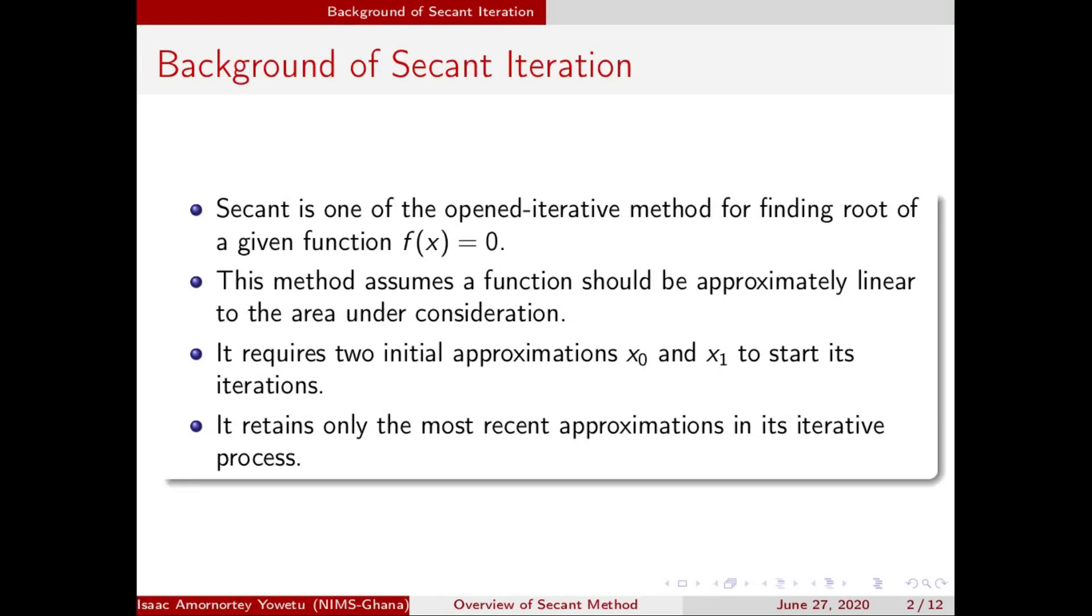This Secant method is one of the open iterative methods for finding roots of a given function. This method assumes the function should be approximately linear to the area under consideration, that is where we want our root to be found. It requires two initial approximations x0 and x1 to start its iterative process and it retains only the most recent approximations in its iterative process.